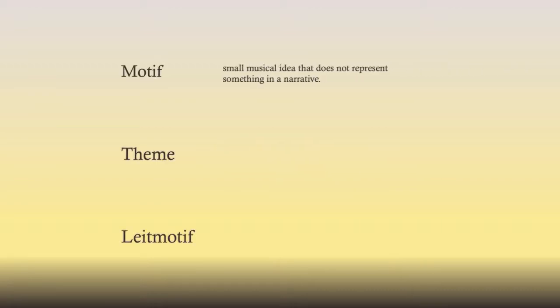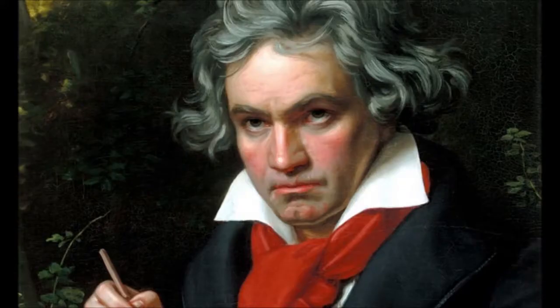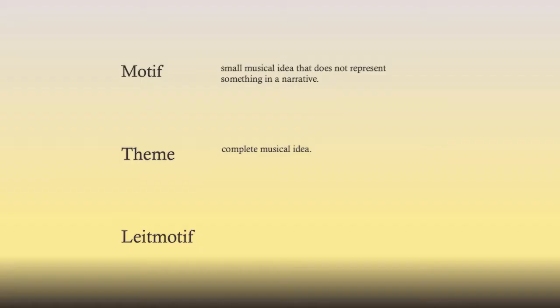Now let's introduce the concept of a leitmotif. First, a little bit of a recap. What is a motif? A motif is a small musical idea that does not represent something in a narrative. What's a theme? A theme is a complete musical idea. So think of Beethoven's Fifth, where you have the motif, and that gets developed into the theme.